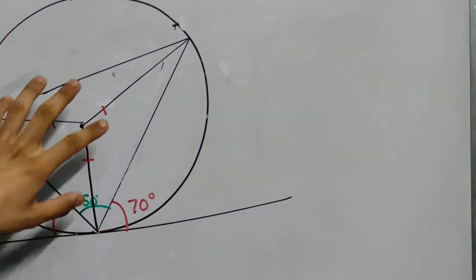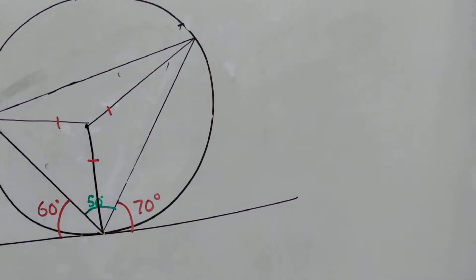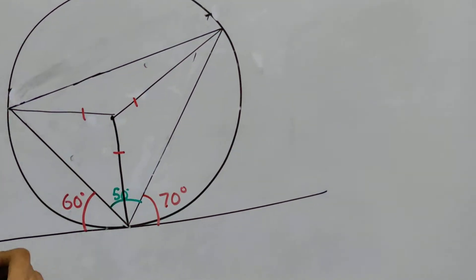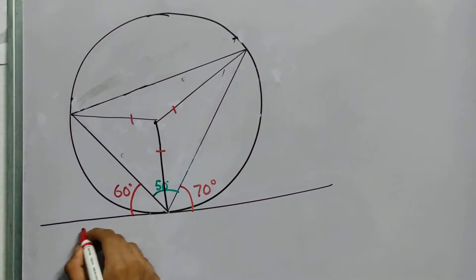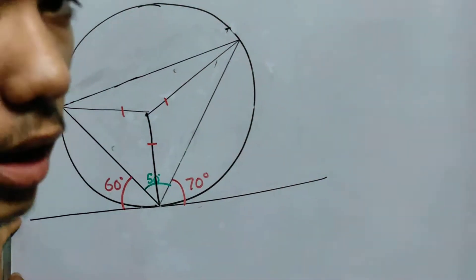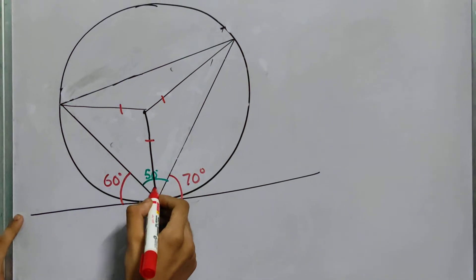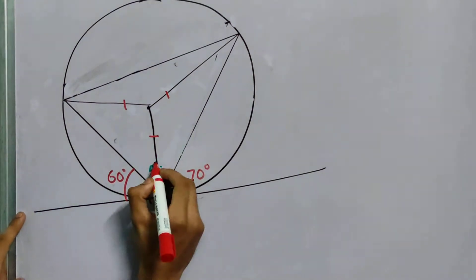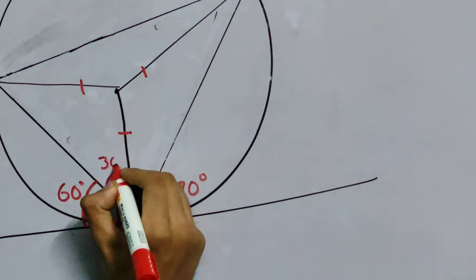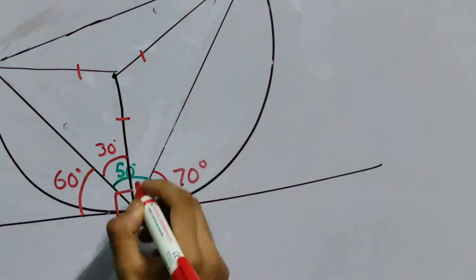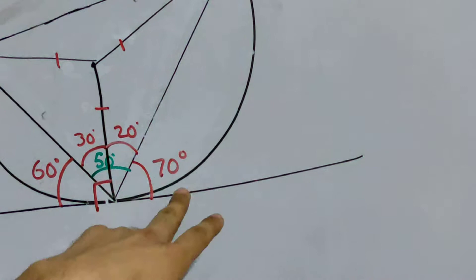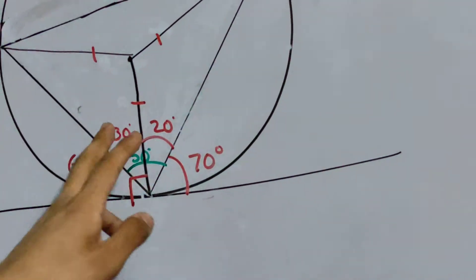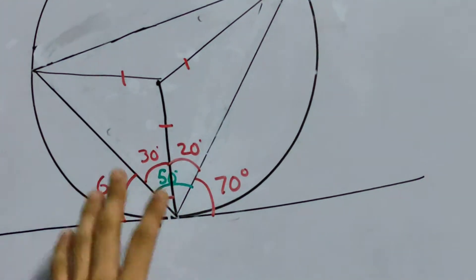And now we are going to use a few properties to find these two. Now look. This is a tangent. This tangent will make an angle of 90 degrees with the radius. This angle must be 90 degrees. So this angle will be 30 degrees, and this angle will be 20 degrees. Similarly, we use a similar logic. And also 30 plus 20 is 50. You can see it from here.